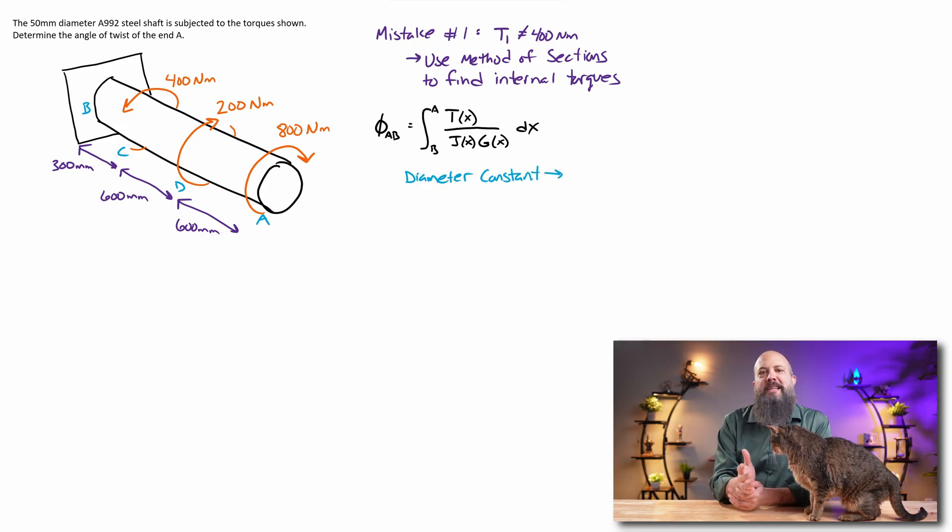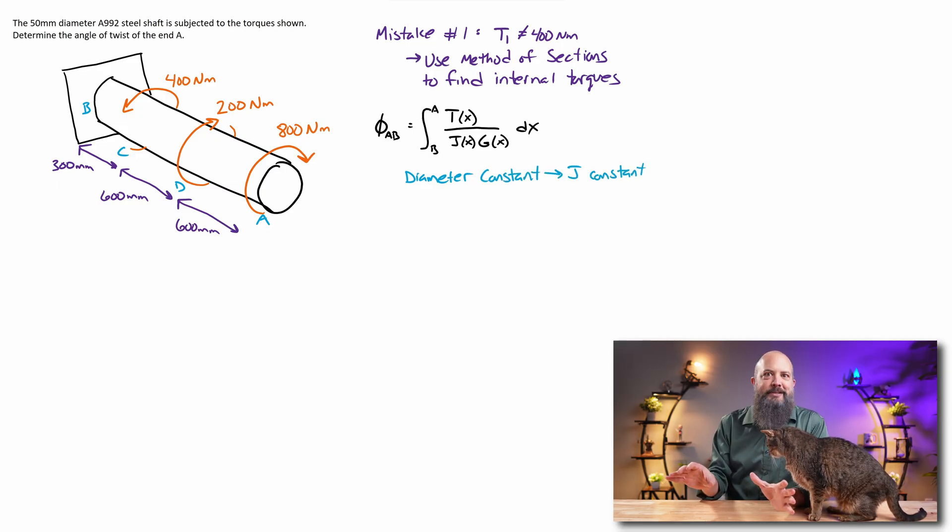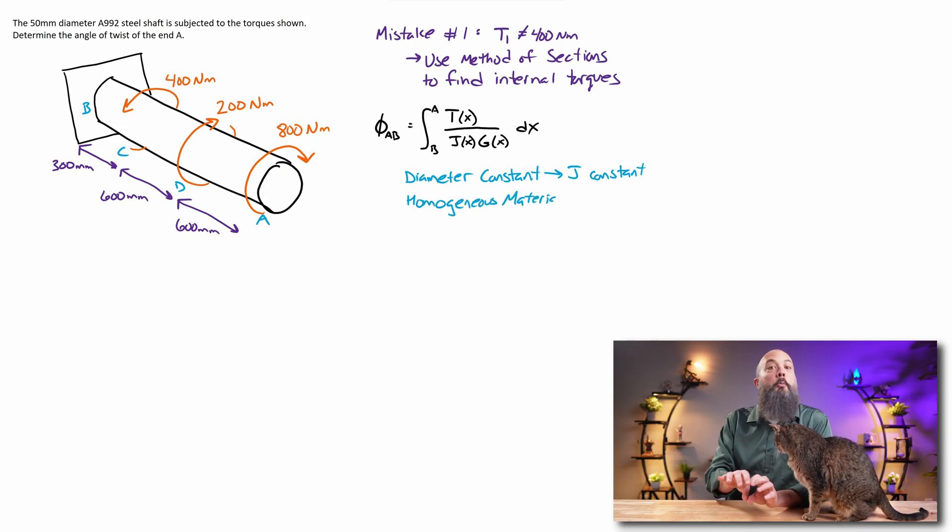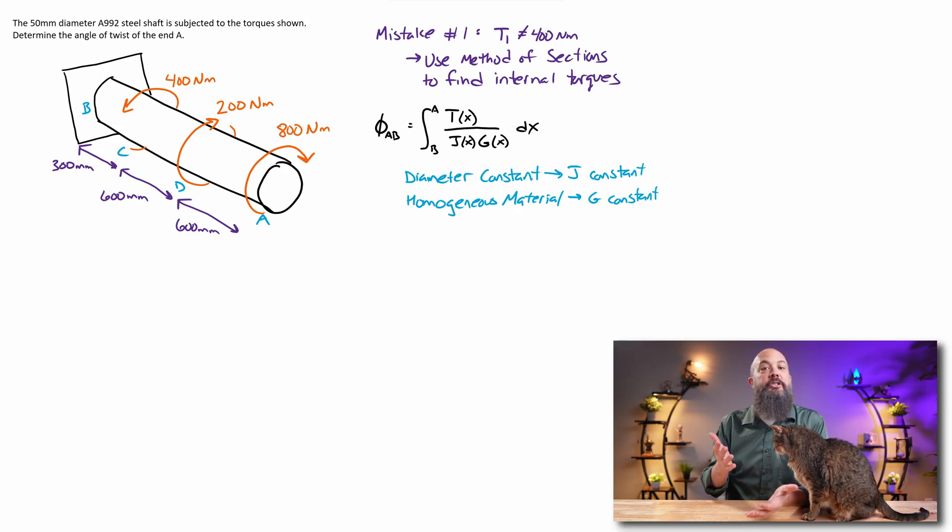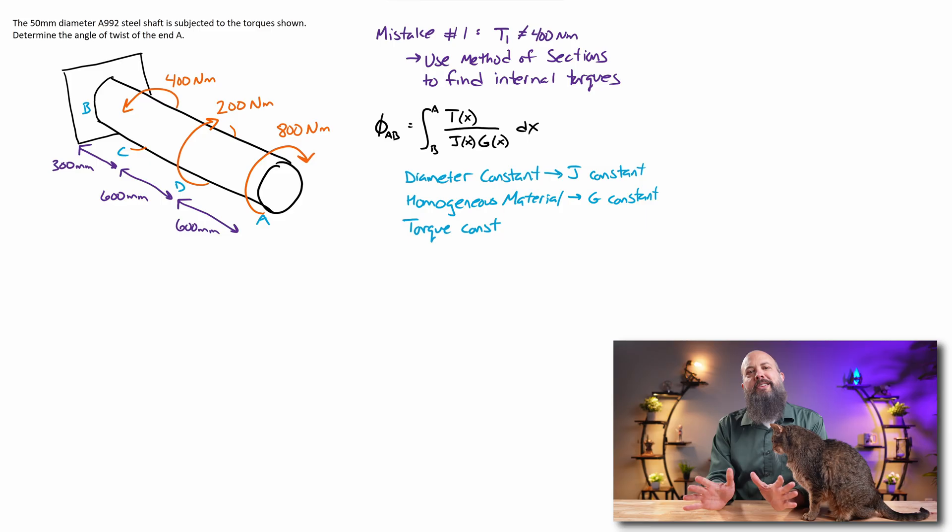For this particular problem, the diameter is constant, so J is going to be a constant polar moment of inertia. If it's a homogeneous material, then G, the modulus of rigidity, will be constant, and then torque is going to be constant for each of the individual sections.